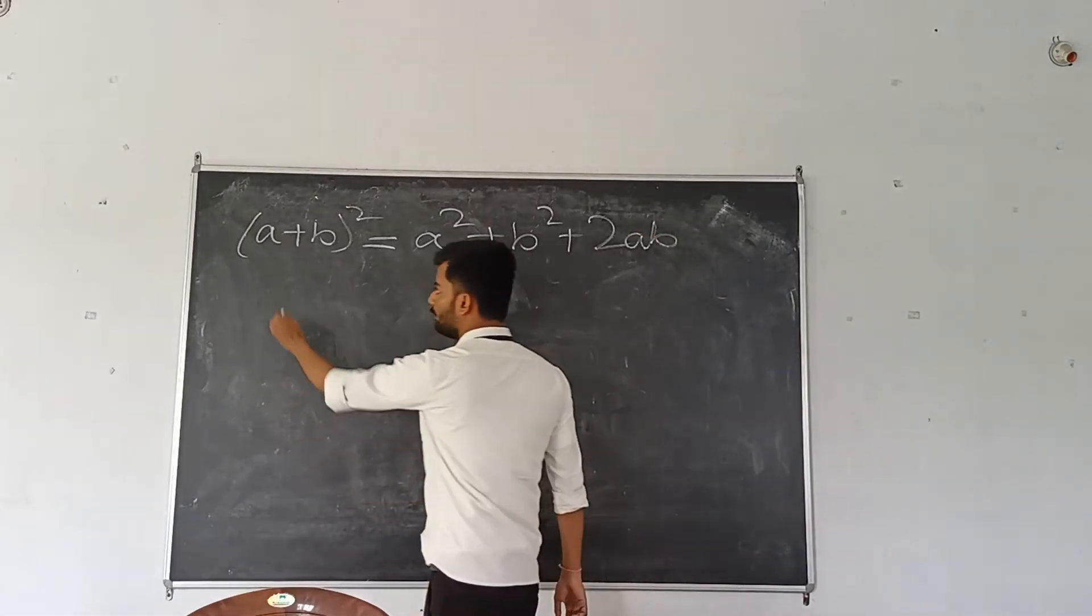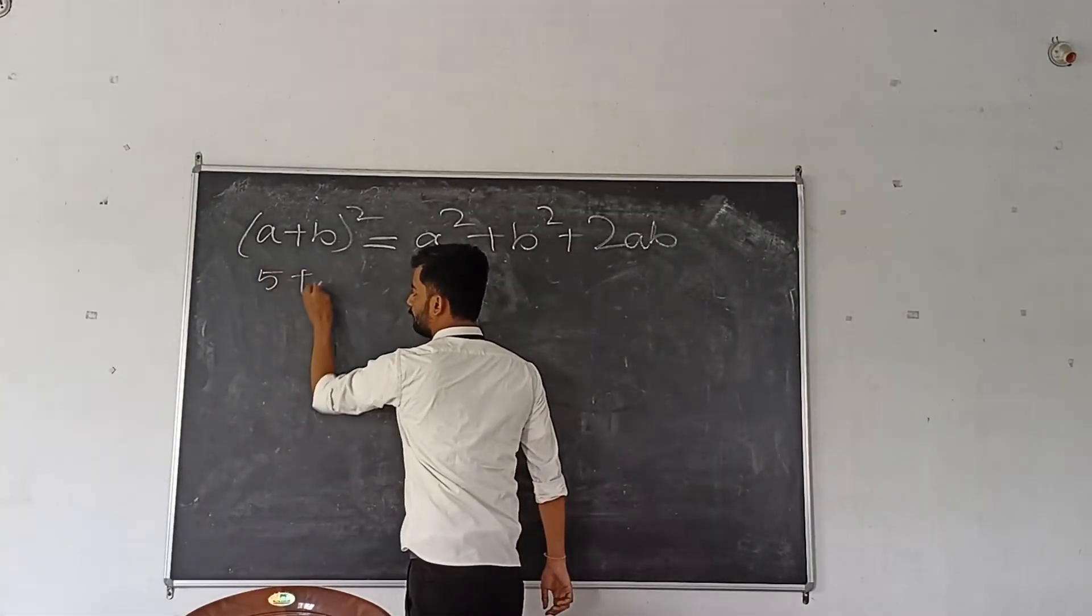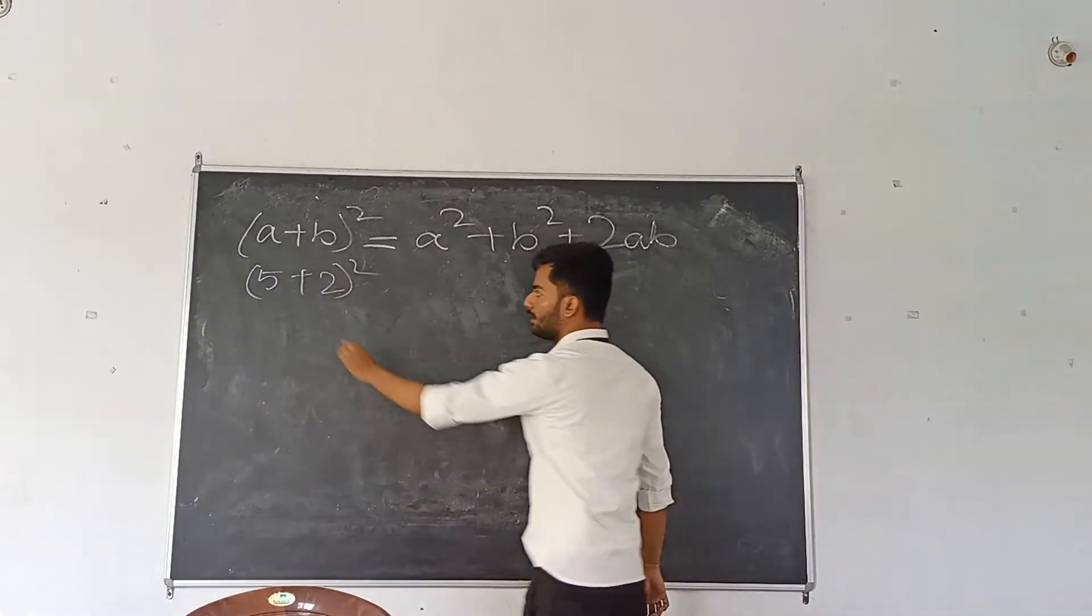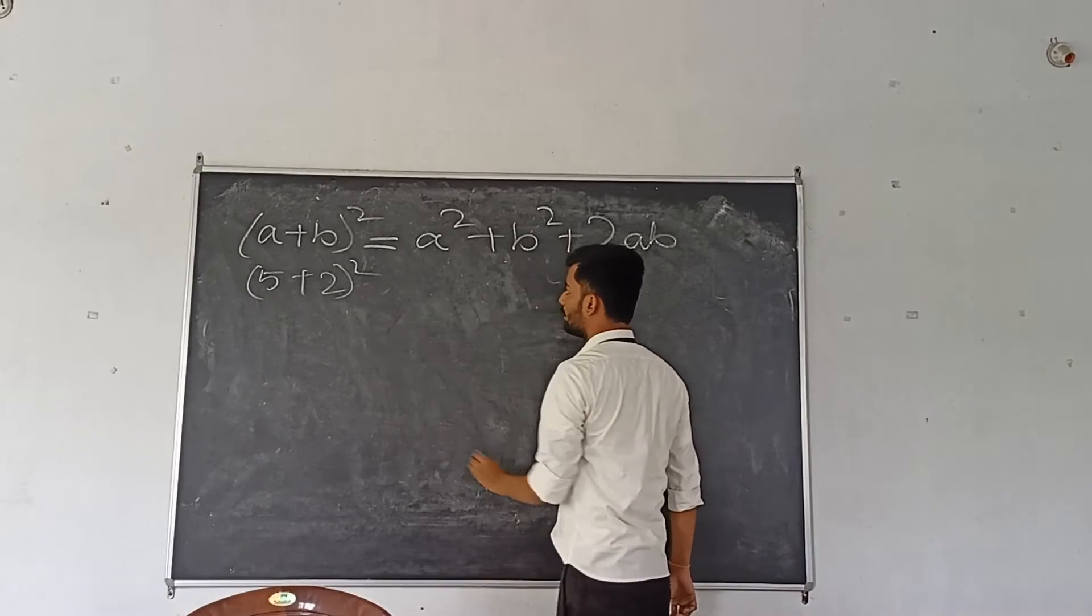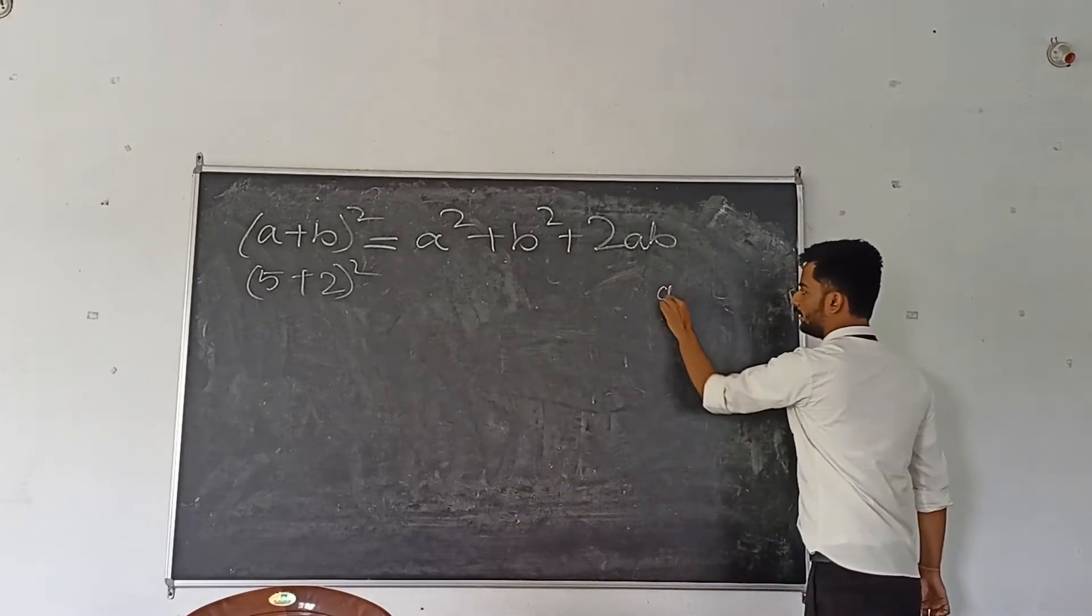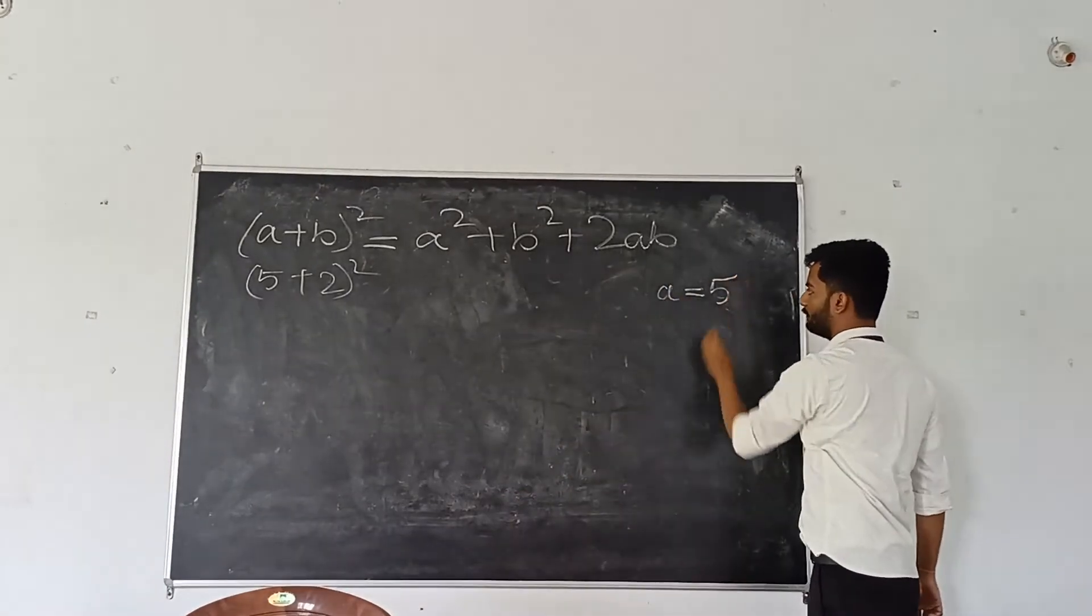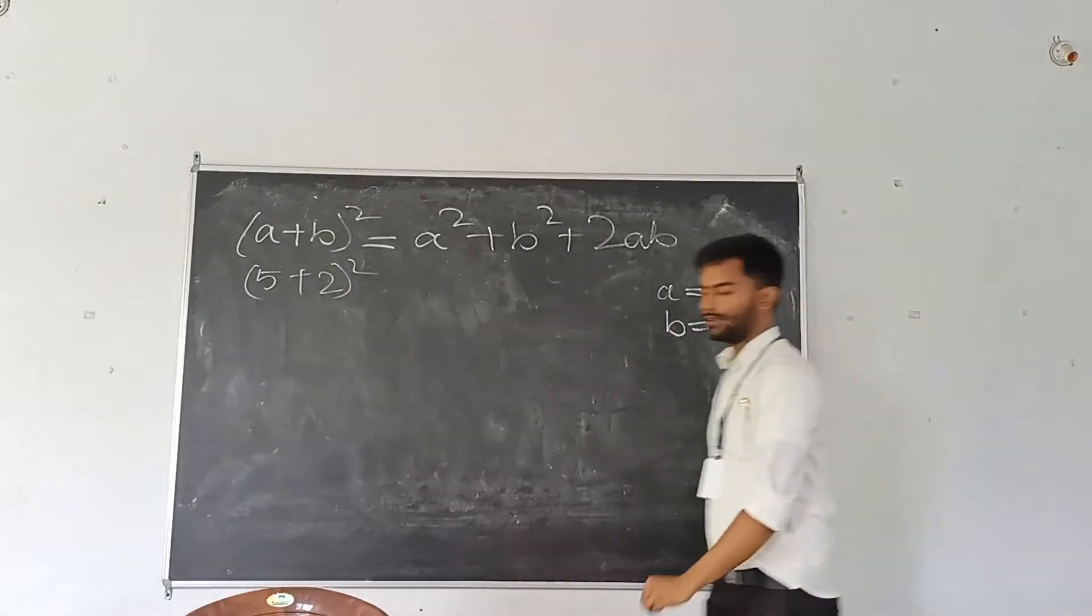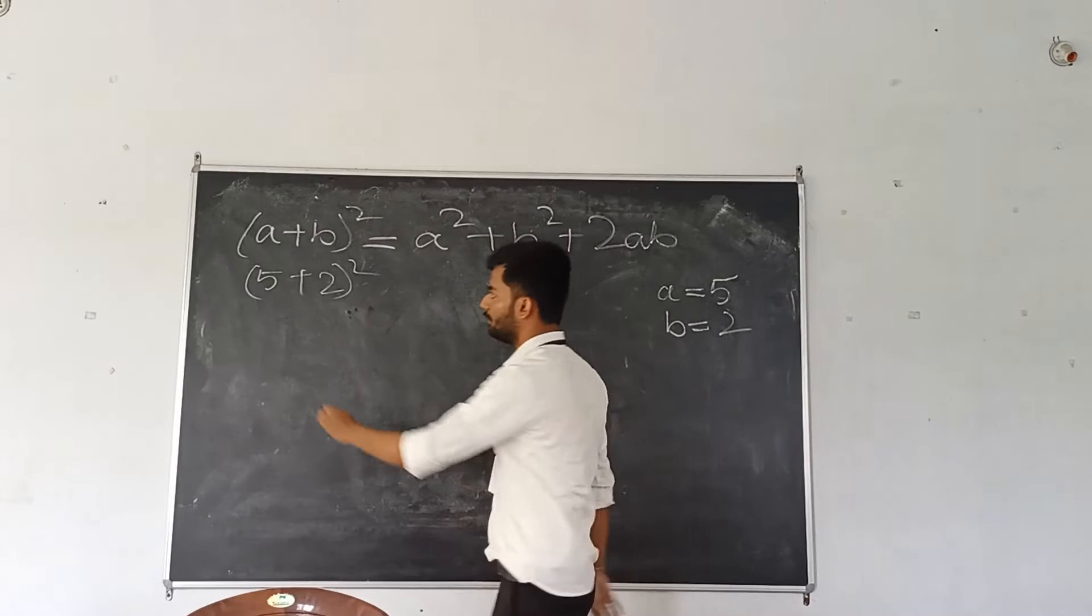So if I give you 5 plus 2, what is the value? In this case, you know where A is 5 and B is 2. If I ask you to solve this,